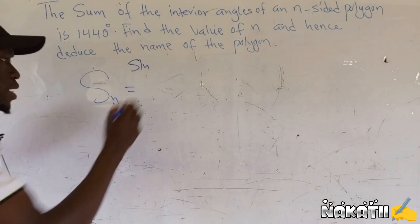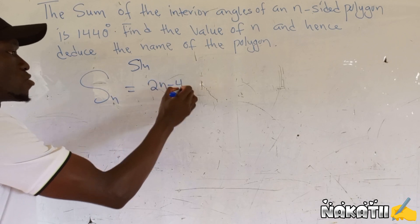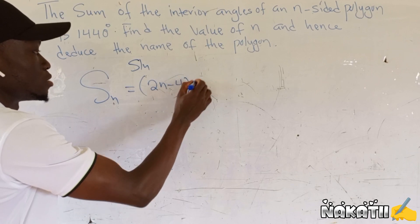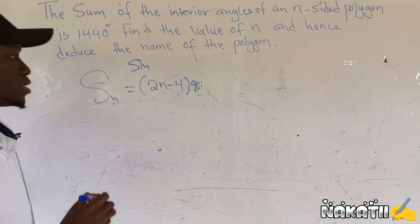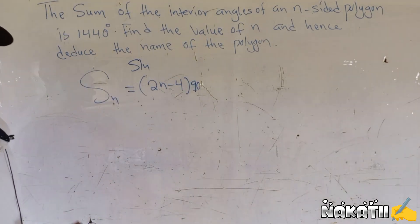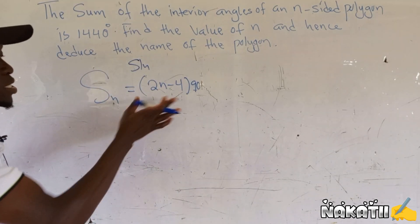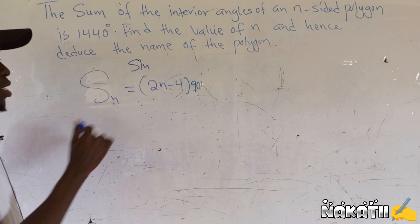Multiplied by 90, so that is the formula that we use. So if I have the sum is 1440 and this is the formula, I just equate this one to this one here. I'm going to have 2n minus 4 multiplied by 90 equals 1440.